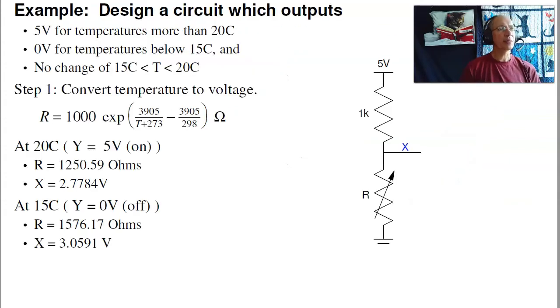As an example, let's design a circuit that turns on at 20C, turns off at 15C, and no change between 15 and 20C. In that case, first I have to pick a temperature sensor. Here I'm choosing a thermistor. Then a voltage divider to convert resistance to voltage. What that does is at 20C when the output turns on, R is 1250 ohms and x is 2.77 volts. At 15C when y is off, R is 1576 ohms and x is 3.05 volts.